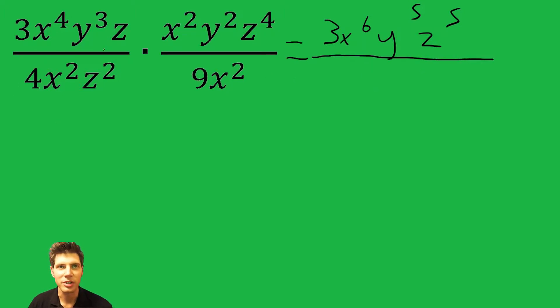Then we can do the same thing to the bottom. 4 times 9 is 36. x squared times x squared is x to the 4th. And then z squared is z squared.